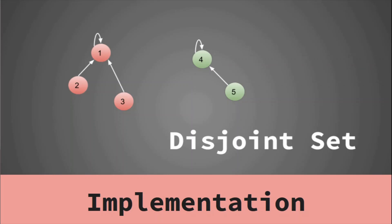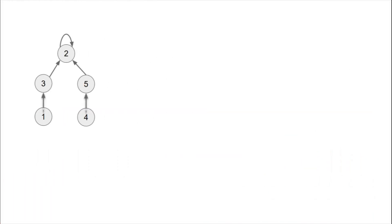Hello guys, this is Code and Code, and this is the fourth video in the lecture series of disjoint sets. In this video we are going to talk about the implementation of disjoint sets. As you can see, this structure has a single connected component and represents a single set. We can represent this structure using a simple array known as a parent array.